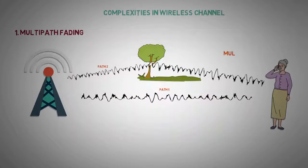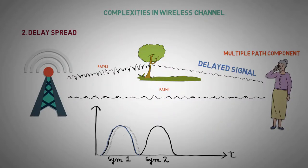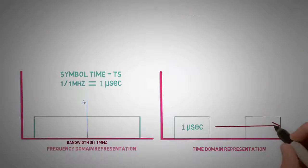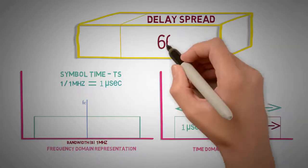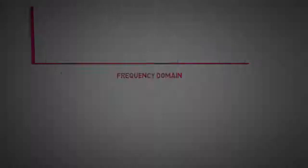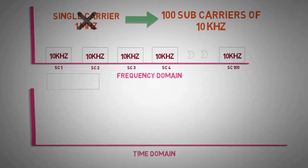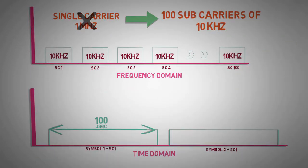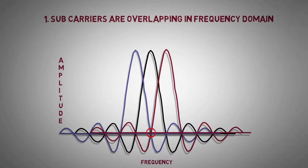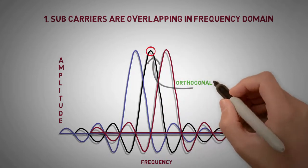So friends, in this video we have shown what are the limitations of wireless channel, how wideband single channel are inefficient for transmission. To overcome, how wideband single channel is divided into small sub-carriers and increase efficiency by reducing delay spread, how concept of orthogonality is introduced in FDMA and achieved multi-fold throughput.